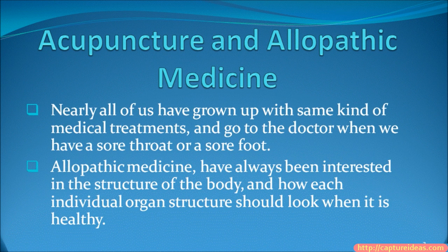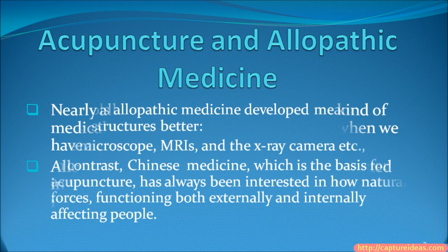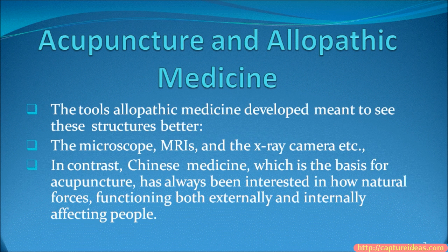Nearly all of us have grown up with some kind of medical treatments and go to the doctors when we have a sore throat or a sore foot. Allopathic medicine has always been interested in the structure of the body and how each individual organ structure should look when it is healthy. The tools allopathic medicine has developed are meant to see these structures better — the microscope, MRI, and the X-ray camera, etc. In contrast, Chinese medicine, which is the basis for acupuncture, has always been interested in how natural forces function both externally and internally, affecting people.